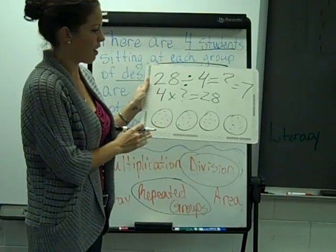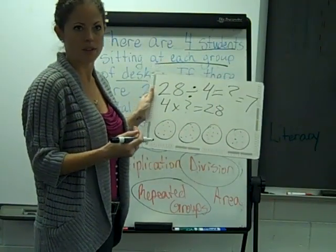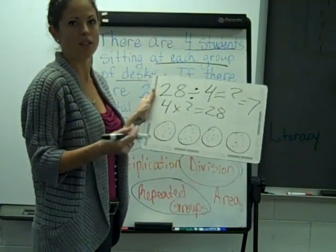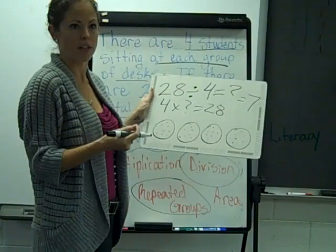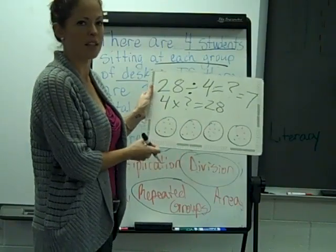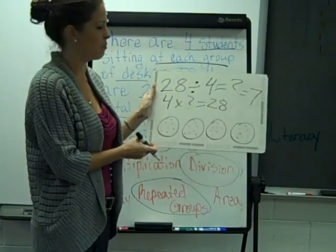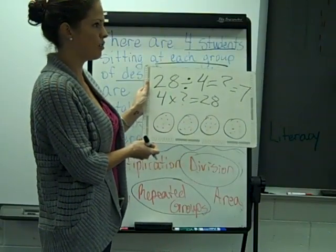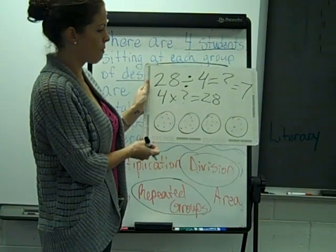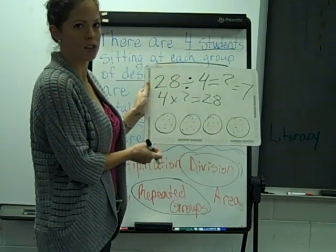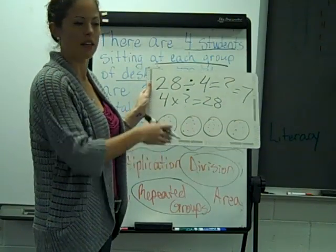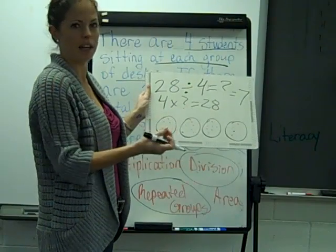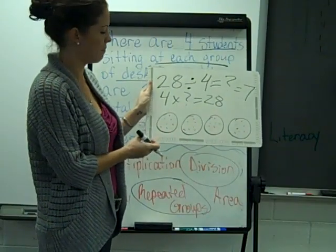You could have also counted up by 4's: 4, 8, 12, 16, 20, 24, 28 — and realize that took 7 times. And you could have used multiplication you already know, such as 4 times 5 is 20, and 4 times 2 is 8, and add those two together to get 28.